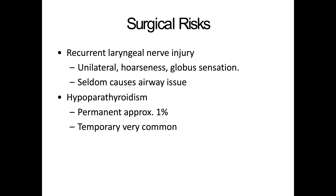Surgical risk: one of the biggest things we worry about is recurrent laryngeal nerve injury. If it's unilateral, they may have some hoarseness and a little bit of globus sensation — it very rarely causes airway issues. Sometimes the surgeon wants to evaluate the vocal cords moving at the end of the case, which can be difficult because it's not uncommon to have swelling and edema after they've worked around the trachea for hours. One of the other big risks is hypoparathyroidism — it's permanent in a low percentage of patients, but often very temporary.